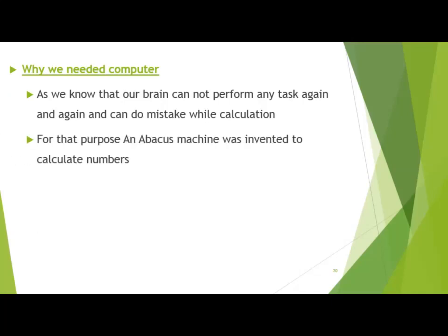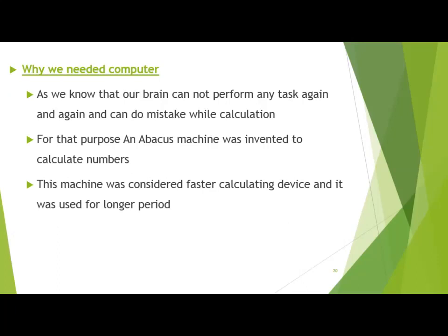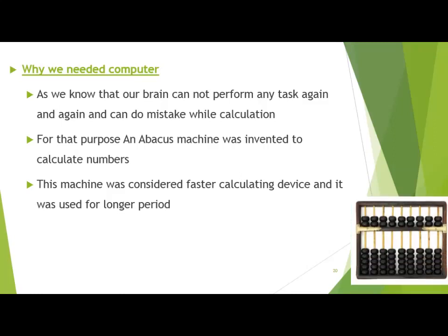For that purpose, an abacus machine was invented to calculate numbers. Abacus was one of the first machines and was considered a faster calculating device, used for a long period. You can see this is the abacus machine. In the next few slides I will discuss its construction and working. Right now, this is the first machine considered the first computer to calculate numbers — remember, computer means to compute numbers, and computation means to count or calculate.